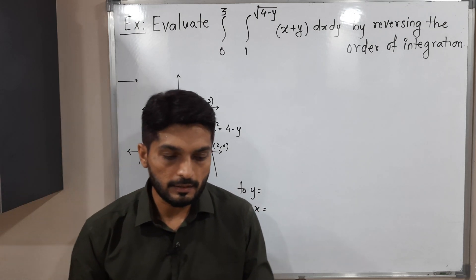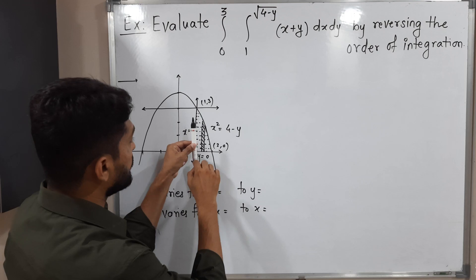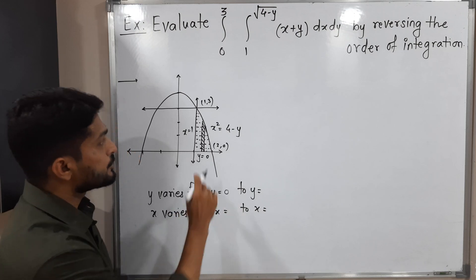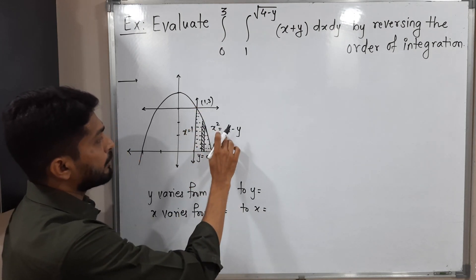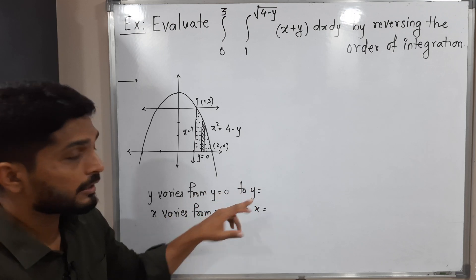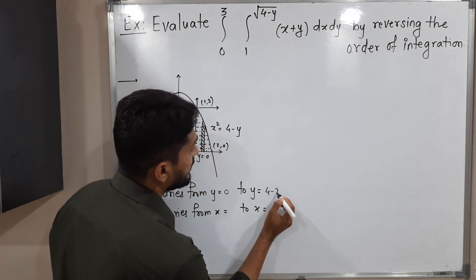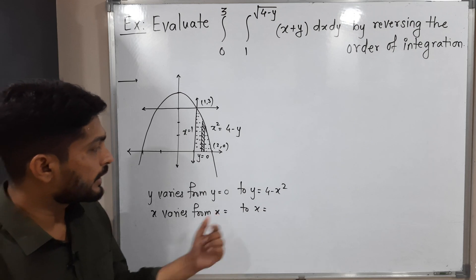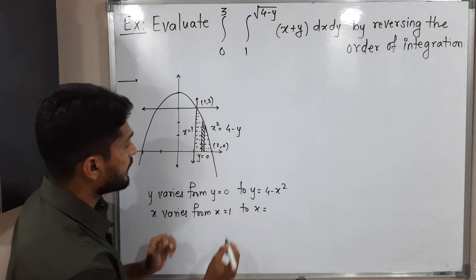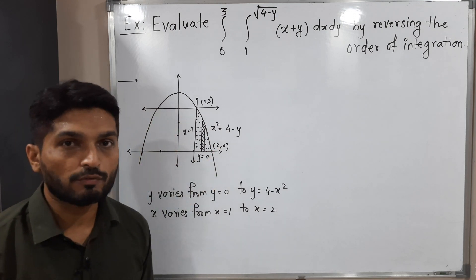The strip is bounded below by y equals 0 and above by the parabola. From x squared equals 4 minus y, shifting terms gives y equals 4 minus x squared. Moving the strip from left to right, it starts at x equals 1 and ends at x equals 2. So the limits of x are 1 to 2.